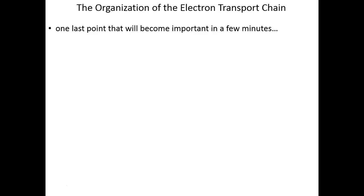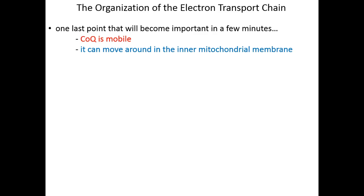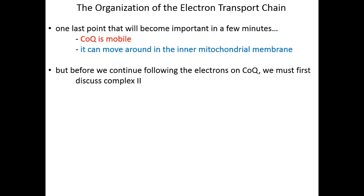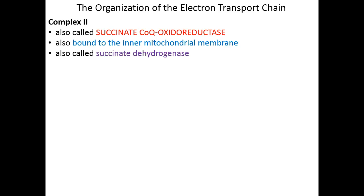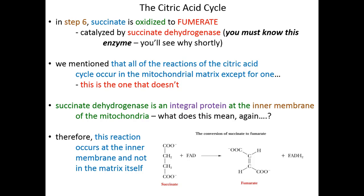One last important point: CoQ is mobile. Just like NAD, CoQ can move around in the inner mitochondrial membrane, and CoQ is going to carry those electrons somewhere for us. Before we follow those electrons, let's go back to Complex II. Complex II, also called succinate CoQ oxidoreductase, transfers electrons from succinate to CoQ. It's bound to the inner mitochondrial membrane, and we know it better as succinate dehydrogenase — an enzyme also catalyzing part of the citric acid cycle.